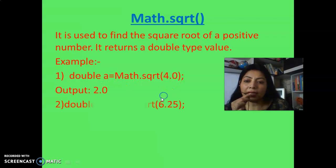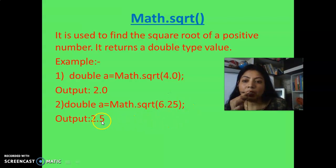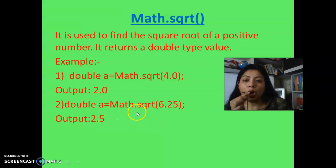Let's see another example with a decimal point: Math.sqrt(6.25) will return 2.5. So this is the Math.sqrt function.